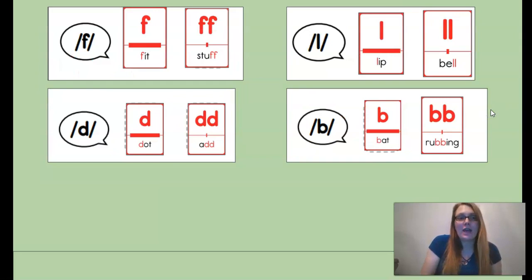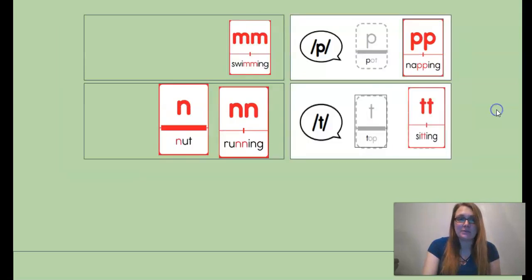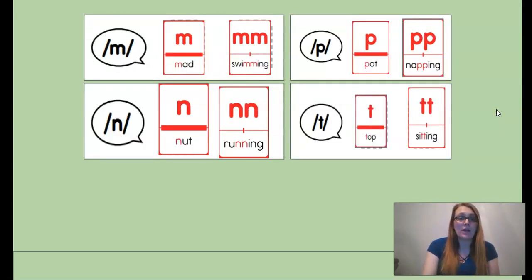For F, we have a single F or a double F. D, we have a D or a double D. L, we have L and double L. B, we have B and double B. K, most of the time is a C, sometimes a K, or even a CK or a double C. G, we have a G or a double G. M, M or double M. N, N or double N. P, P or double P. T, T or double T.